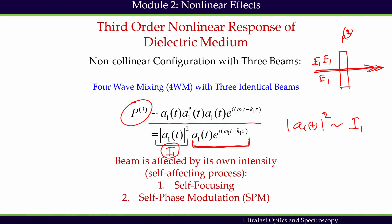Therefore, the intensity of the beam affects itself. This polarization results in an emitted pulse at the same center frequency as the input beam, propagating in the same direction, but affected by its own intensity. This is called a self-affecting process. Two important self-affecting processes are known: self-focusing and self-phase modulation. We will stop here and continue the subject in the next class.